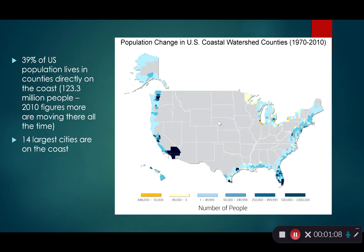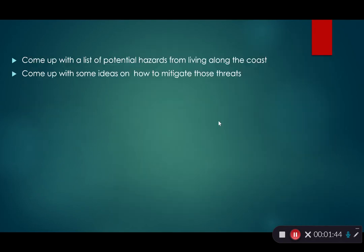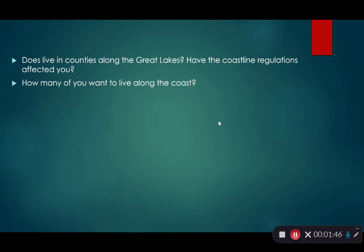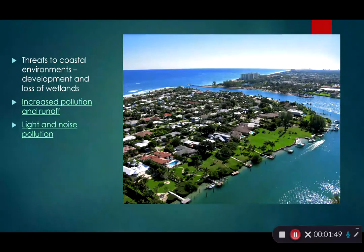About 39% of the US population lives in counties directly on the coast. Fourteen of our largest cities are on the coasts, and about 60% of the population lives within 50–100 miles of the coast, making them vulnerable to coastal hazards such as rising sea levels and hurricanes.